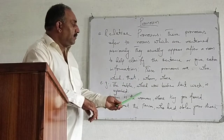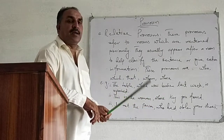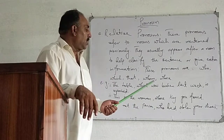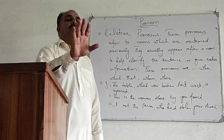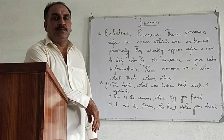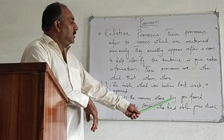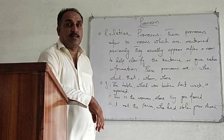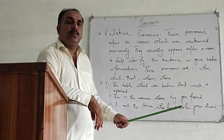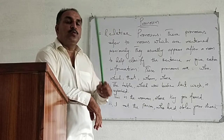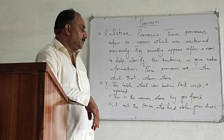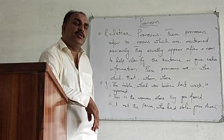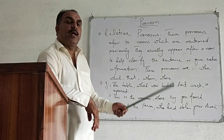Examples: 'The table which was broken last week is repaired.' Here 'the table' is the noun already mentioned, and 'which was broken last week' is additional information. 'This is the woman whose key you found.' 'I met the person who had stolen your shoes' — which person did you meet? I met that person who had stolen your shoes.